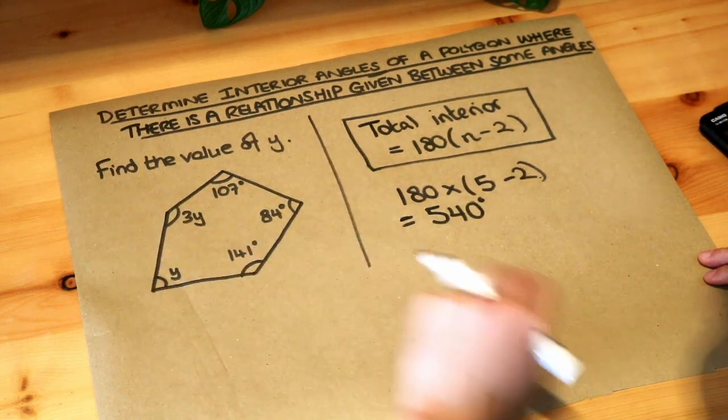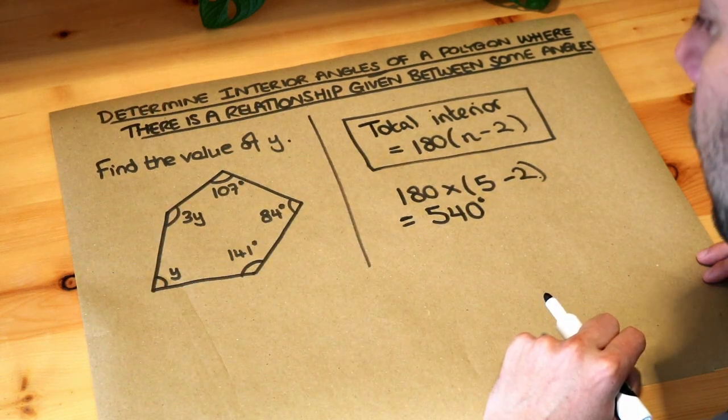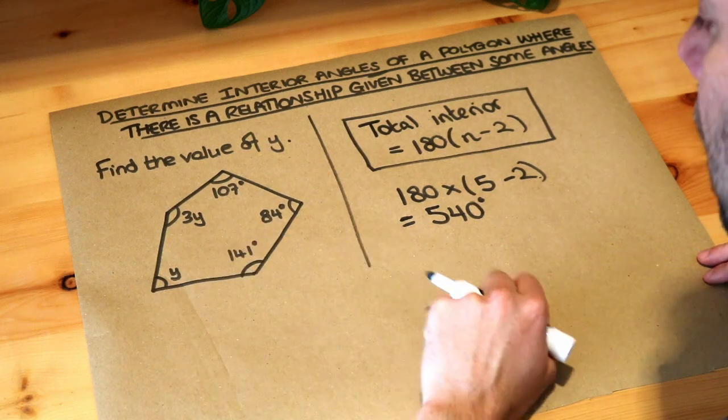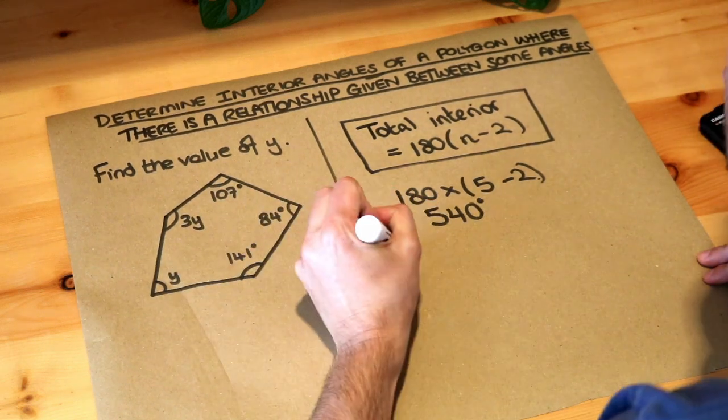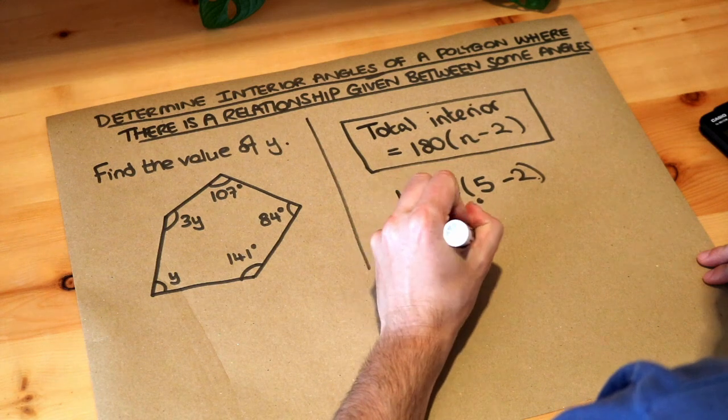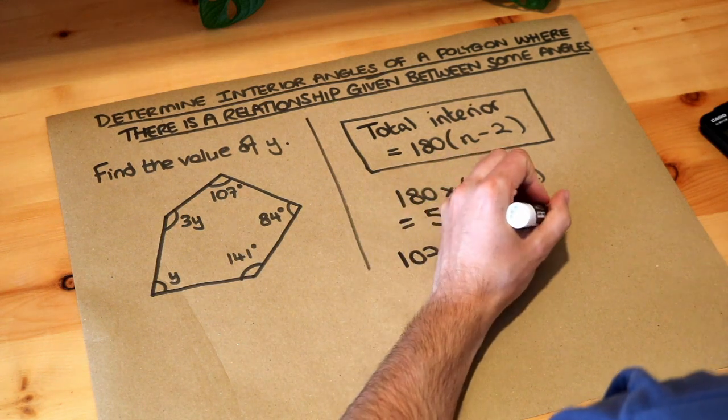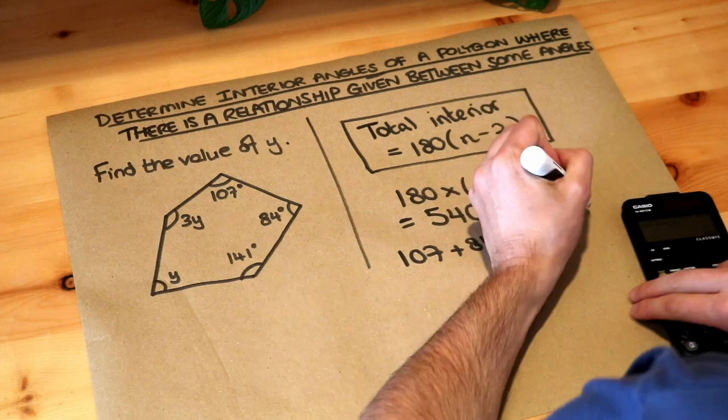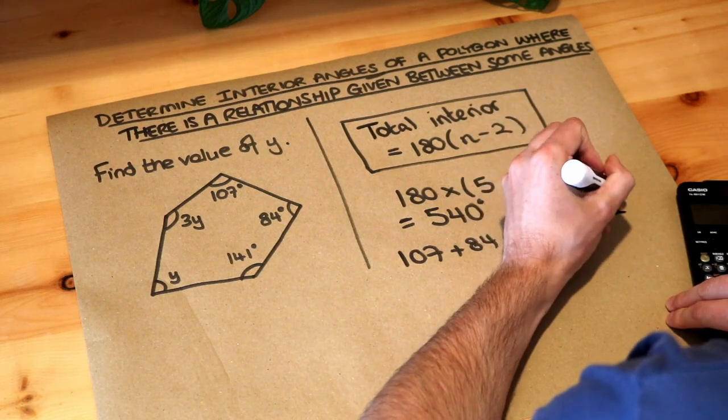So the total of these five angles is 540. Now if we just have the ones that don't have a variable in them, so these three angles here, so 107 plus 84 plus 141, you get 332 degrees.